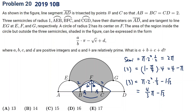Putting everything together: 2 pi plus (four minus pi) plus (four pi over three minus root three) equals seven pi over three plus four minus root three. So A, B, C, D added together gives 17.